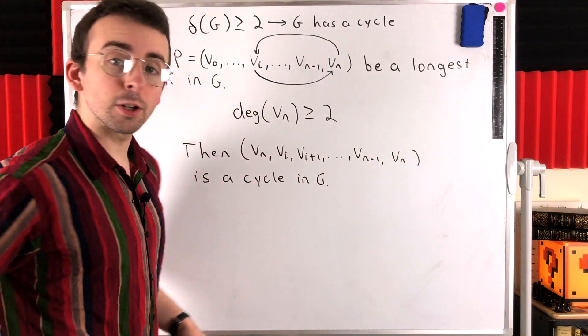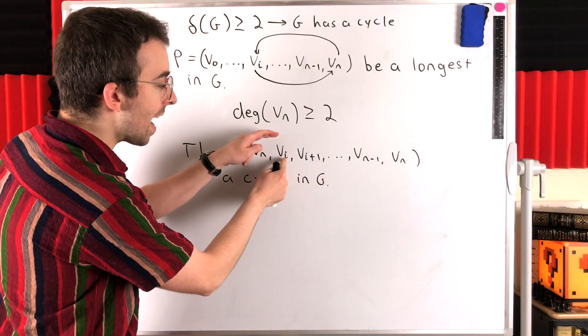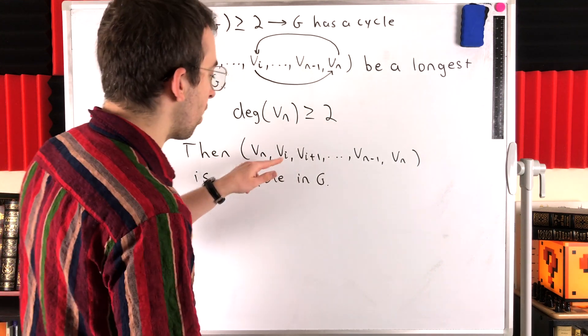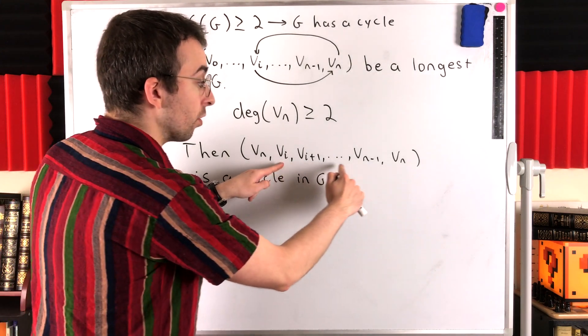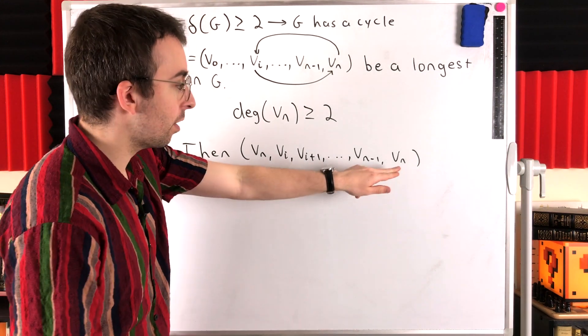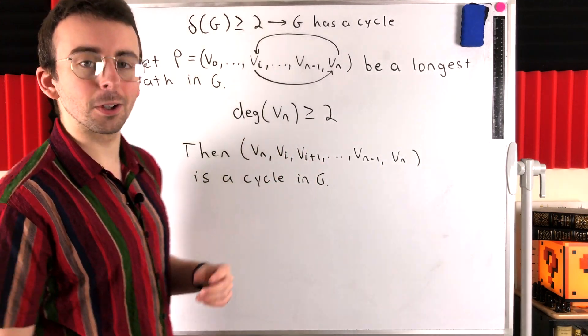So there is our cycle written out: we go from the last vertex in the path to that neighbor that we know exists on the path, other than VN minus one, and then we just proceed back along the path all the way up to VN. That is our guaranteed cycle in G.